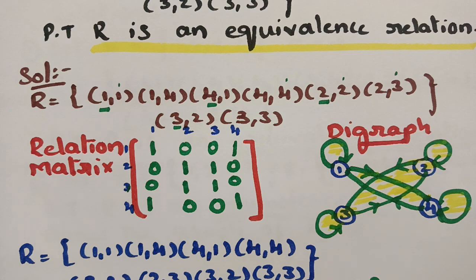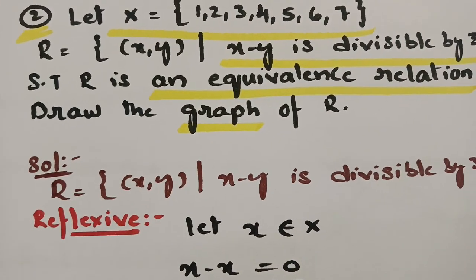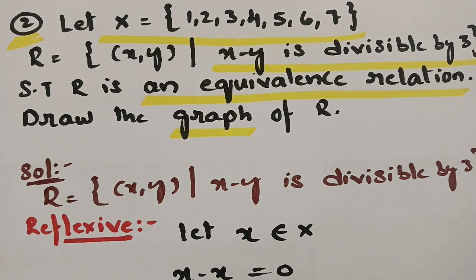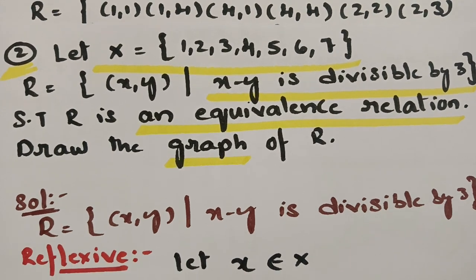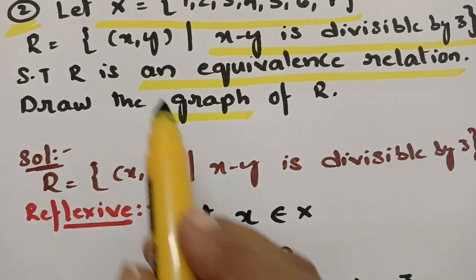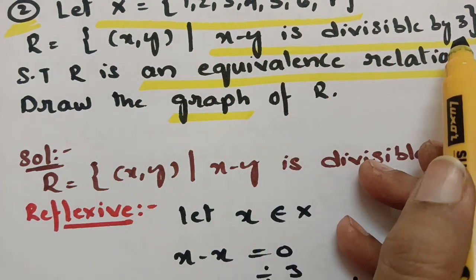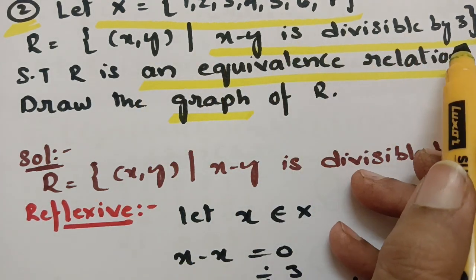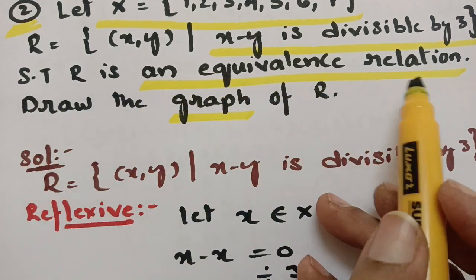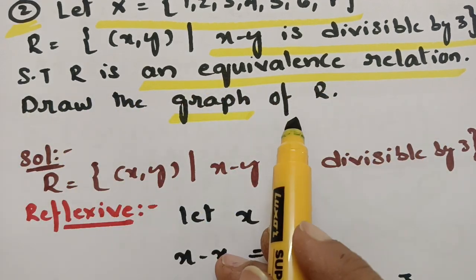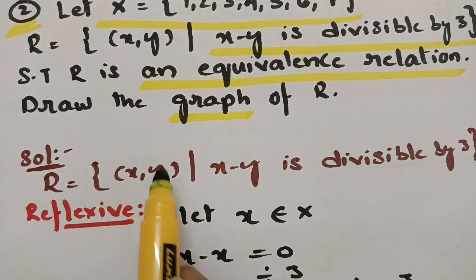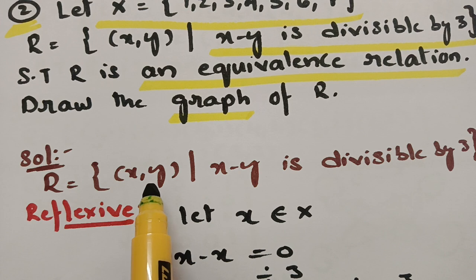Coming to the next important question: let X = {1, 2, 3, 4, 5, 6, 7}. The relation R is defined as the set of ordered pairs (x, y) such that x minus y is divisible by 3. We have to show that R is an equivalence relation and draw the graph of R.